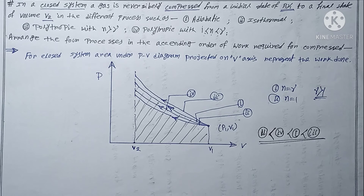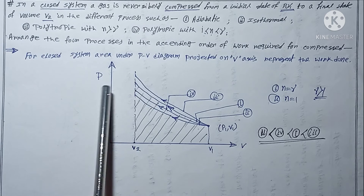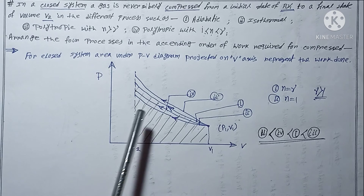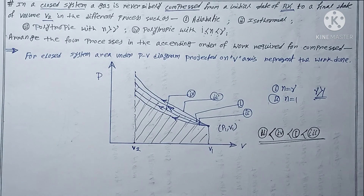So the ascending order of work required for compression is: isothermal, then polytropic (1<n<gamma), then adiabatic, then polytropic (n>gamma). The method is: first draw the axes and mark states 1 and 2, then draw each process curve based on its index value n, remembering that going clockwise increases n — so higher n means the curve is steeper and the enclosed area is larger.